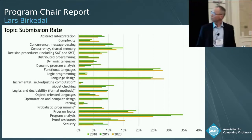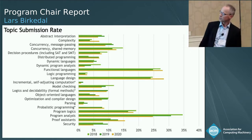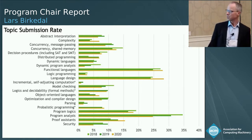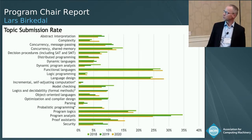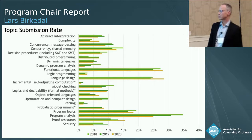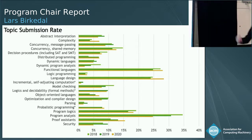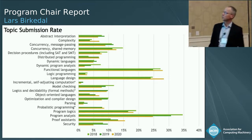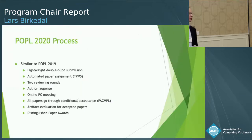Looking at it more closely, here's the breakdown for different years. The light green is 2018, dark green is 2019, and the yellow is 2020. You can see there have been relatively fewer papers in program analysis, a few more in language design, and recently we've also had more papers in probabilistic programming. Otherwise, I think it's minor variations.